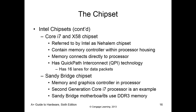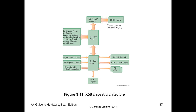A few years ago, Intel's Core i7 changed the way the north bridge functioned. AMD stayed with the traditional north bridge and south bridge for the longest time. Intel found that by moving memory directly to the processor rather than connecting it to the north bridge, you get more speed. The north bridge still handles video and the processor, but memory is now directly connected to the processor for a faster connection.